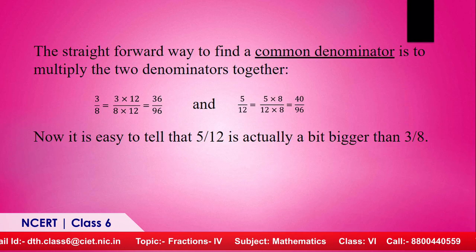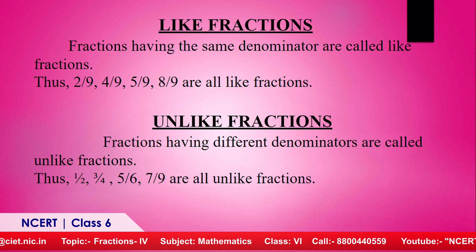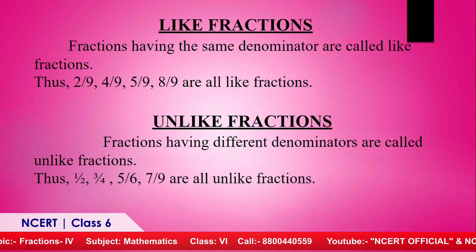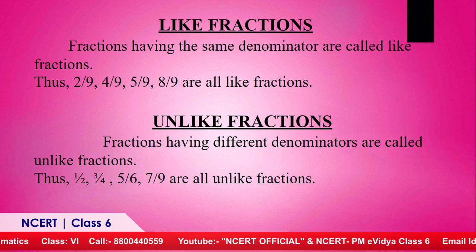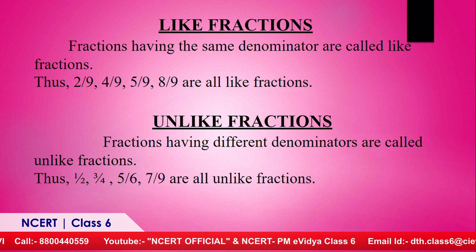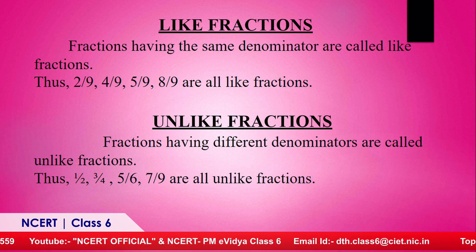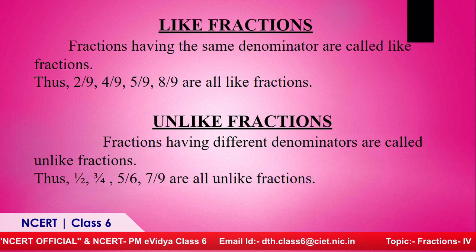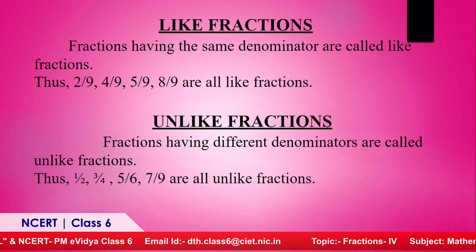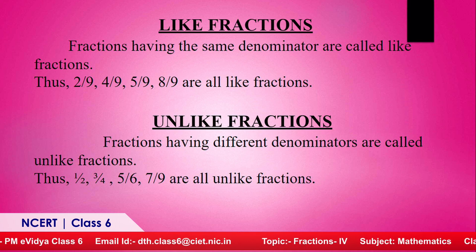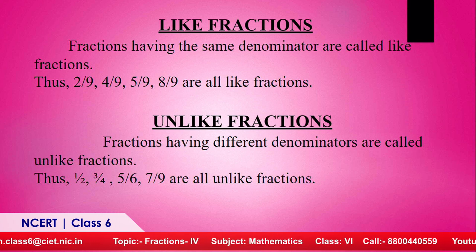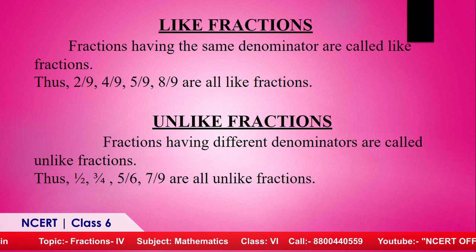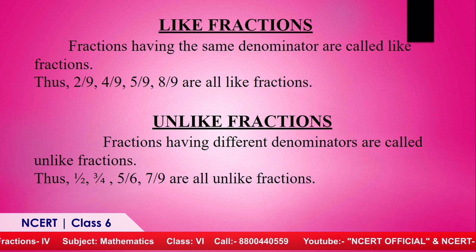Fractions having the same denominator are called like fractions. For example, two upon nine, four upon nine, five upon nine, and eight upon nine are all like fractions. Fractions having different denominators are called unlike fractions. For example, one upon two, three upon four, five upon six, and seven upon nine are all unlike fractions.